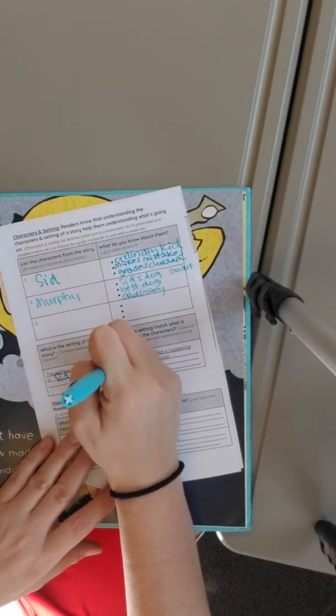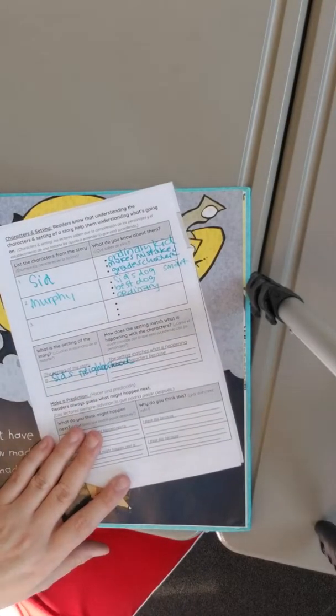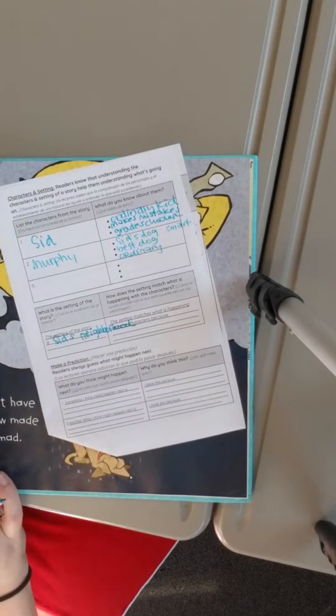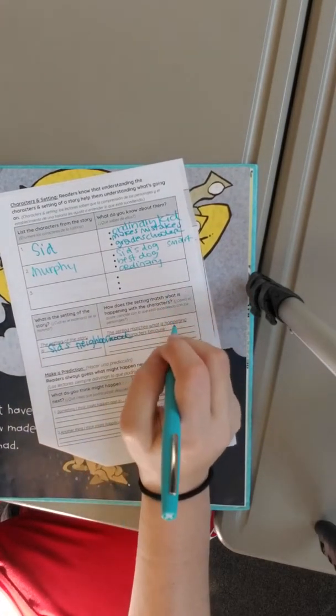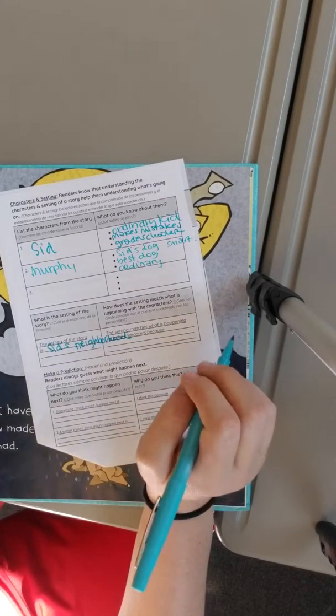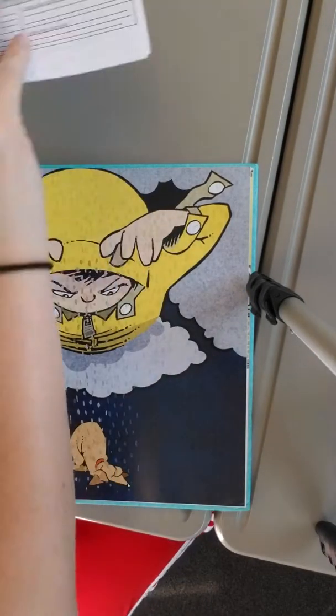So I think the setting of the story is Sid's neighborhood, because it shows all the things that are in a neighborhood like your house, a park, right? How does the setting match what is happening with the characters? Let's wait to answer that because I'm not sure yet. Let's see what happens next.